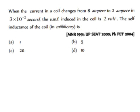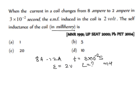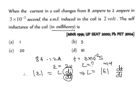The next problem: when current in a coil changes from 8 ampere to 2 ampere in 3 × 10⁻² seconds, and the EMF induced in the coil is 2 volt, find the self-inductance L in millihenry. We know that induced EMF = L × (di/dt), so L = EMF × dt / di.